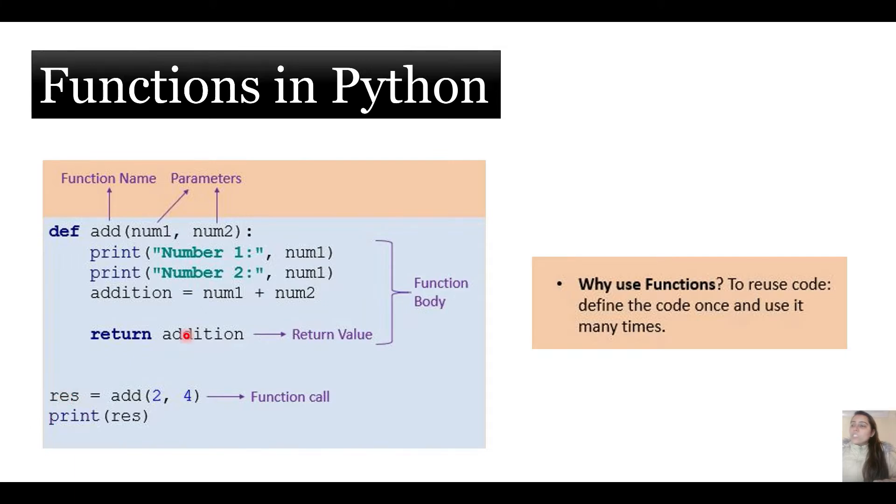Suppose you are storing this return value in this variable called res, and then calling the function add 2, 4 and passing in the arguments 2 and 4 which will become the parameters for this function. 2 will become num1 and 4 is num2 for this function. The result will be 6 which will get stored over here in res and then you will be printing res and 6 will be getting printed.